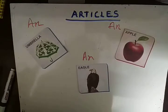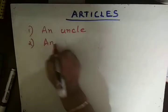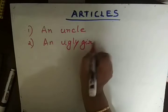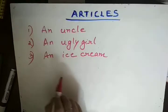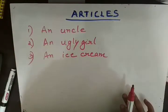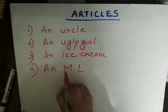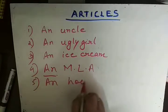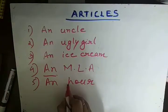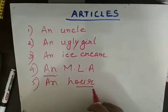Let's see other examples: an uncle, an ugly girl, an ice cream. In all three you can see there is a vowel sound, so we use AN. Now here is an exception example: an MLA — M is a consonant, but I am writing AN here. Why? Because the sound is 'em', which is a vowel sound. Similarly: an hour — it starts with a consonant H, but sounds like a vowel 'ou'. There is a separate class on exceptions with many more examples: an European, an MLA, an hour, an unicorn.